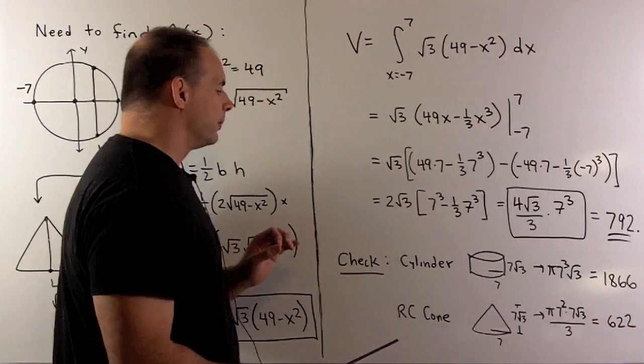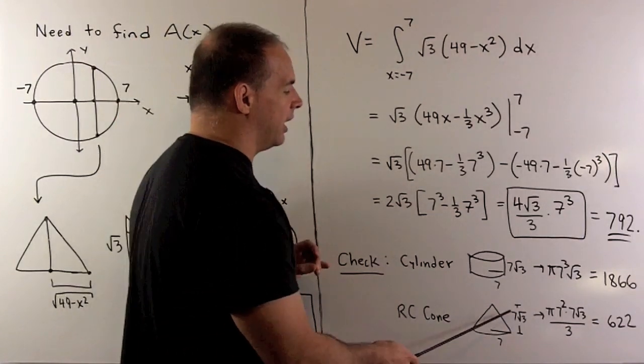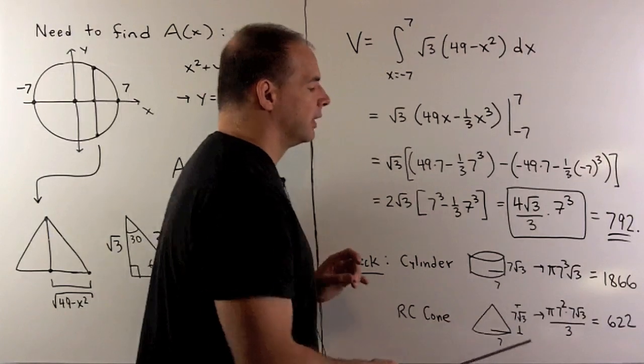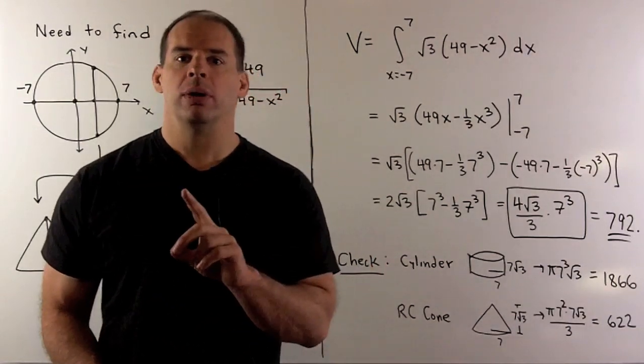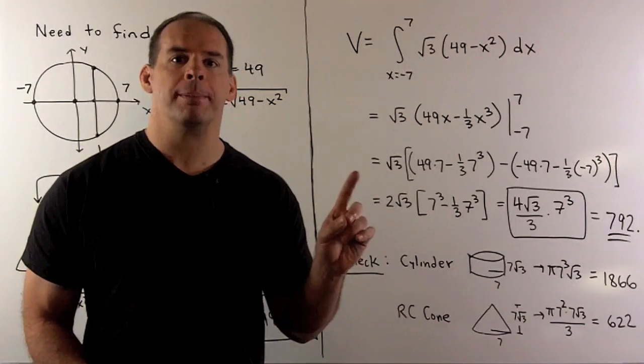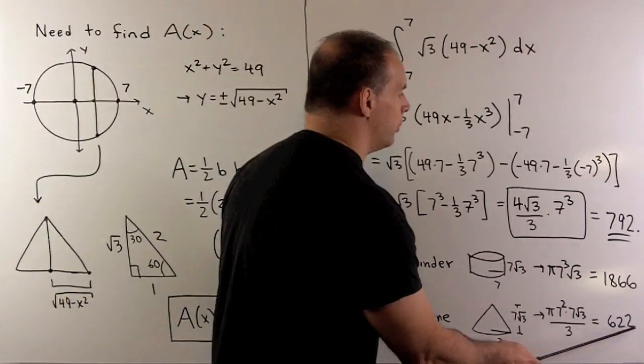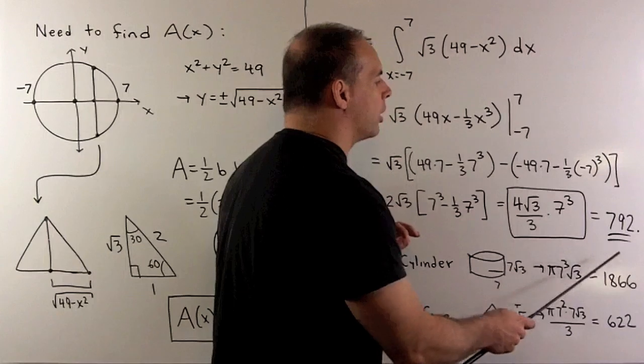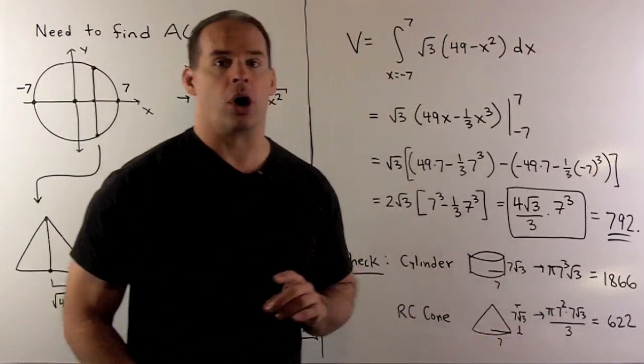On the other hand, I can take the right circular cone with the same base and, again, height 7 square root of 3. Our original solid is not a right circular cone, but it's comparable in volume. So, you can draw the pictures to see that. In this case, the volume is going to be 622. And that's sort of in the ballpark of our original figure. That's going to be my check on the work.